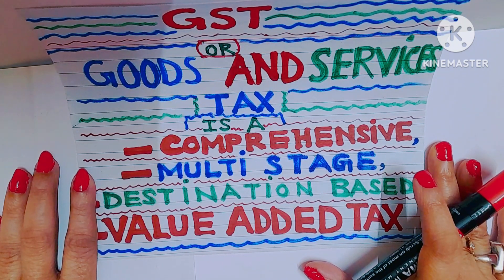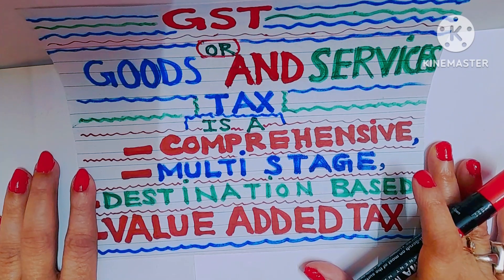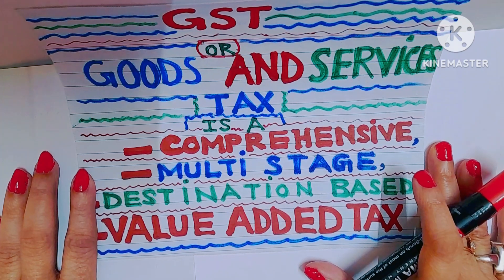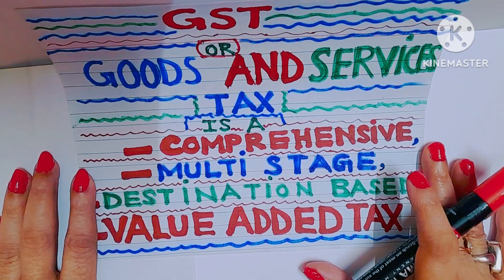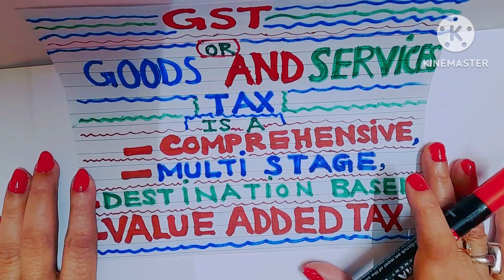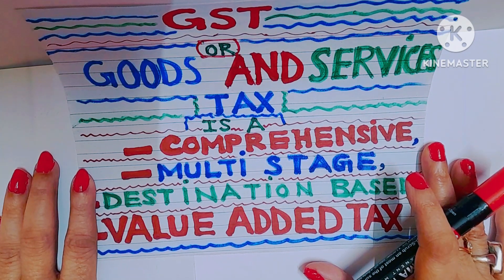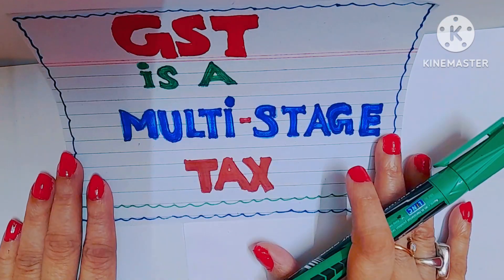As we all know, GST or Goods and Services Tax is a comprehensive, multi-stage, destination-based, value-added tax. In other words, GST is a comprehensive, multi-stage, destination-based tax that is levied on every value addition.